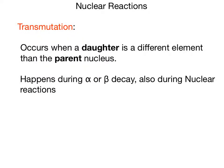Here's a vocabulary term that I think we've looked at already, and that's transmutation. A transmutation occurs when the daughter nucleus is a different element than the parent nucleus. This happens during alpha or beta decay. It also happens during nuclear reactions, which is what we're going to look at today.